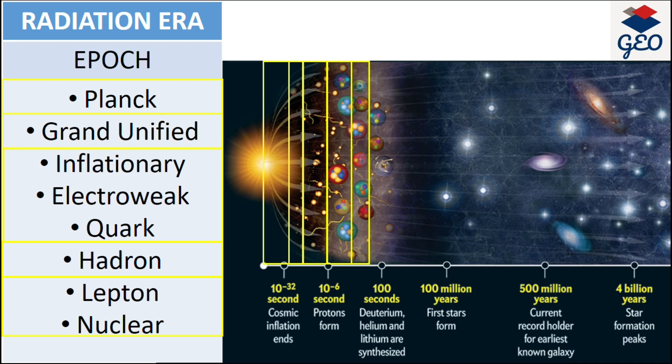But during the lepton and nuclear era, the neutrons and protons changed significantly. The first chemical element, which is helium in this universe, was created during this era, which is the nuclear era.